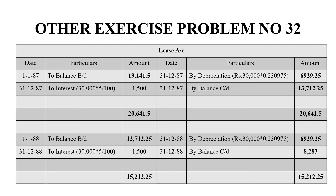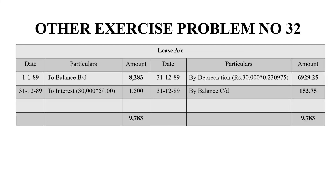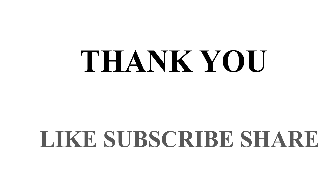In the next year, the balancing figure is 8,283 rupees, and the grand total on both sides is 15,212 rupees 25 paise. For the fifth and final year, the figure is 11,189 rupees 25 paise and the grand total on both sides is 9,783 rupees. This completes the 5-year lease account. The final year balance of the lease account shows the cost of 3,000 rupees 25 paise.